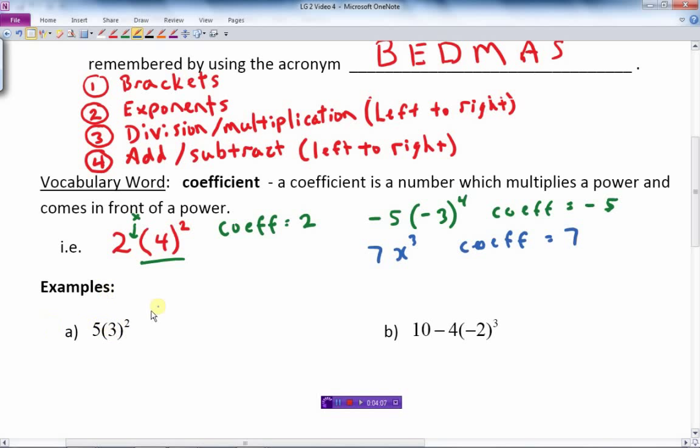Here's the first example. This first example has a power multiplied by a coefficient. The first thing we do is the brackets. There is a bracket but in the bracket it's just a number, so we can't do anything with that. The bracket is solved, but we have to do the exponent next, so we square the 3.